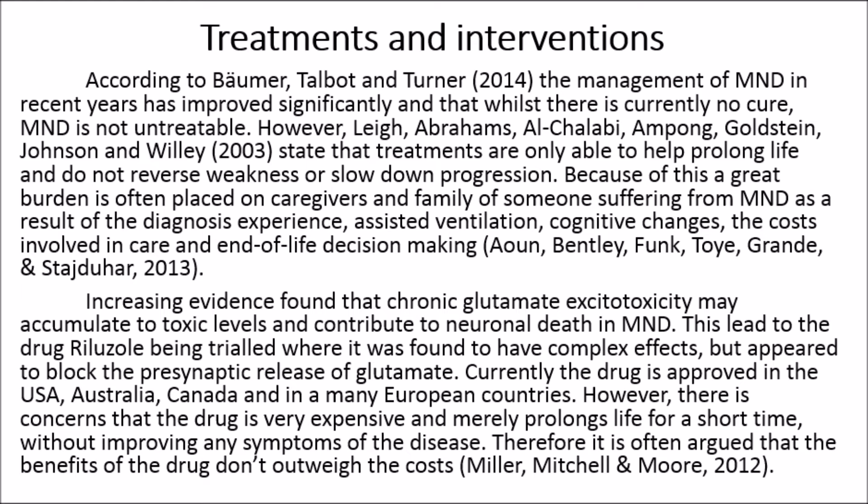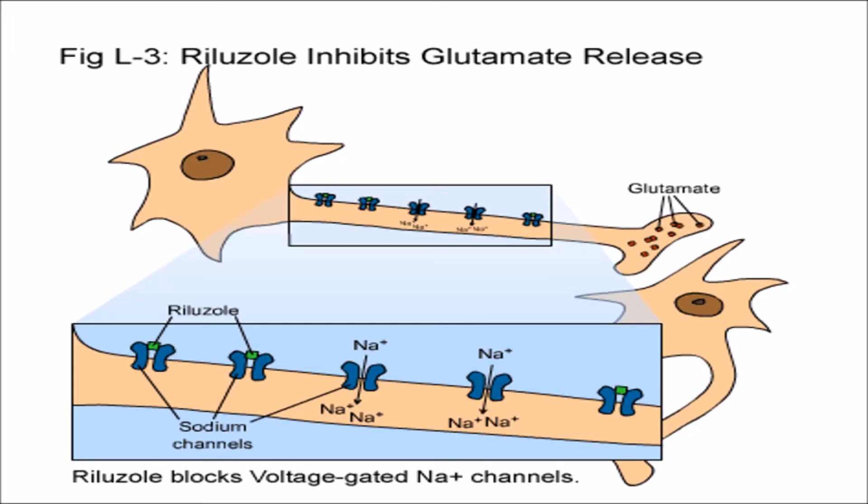Increasing evidence found that chronic glutamate excitotoxicity may accumulate to toxic levels and contribute to neural death in MND. This led to the drug Riluzole being trialled, where it was found to have complex effects but appeared to block the presynaptic release of glutamate. Currently the drug is approved in the USA, Australia, Canada and many European countries. However, there are concerns that the drug is very expensive and merely prolongs life for a short time without improving any symptoms of the disease. In this diagram, you can see the effect that Riluzole has by blocking the voltage-gated ion channels and therefore inhibiting glutamate release.